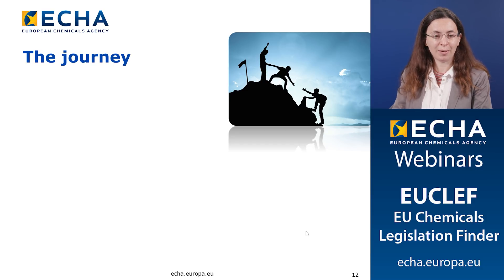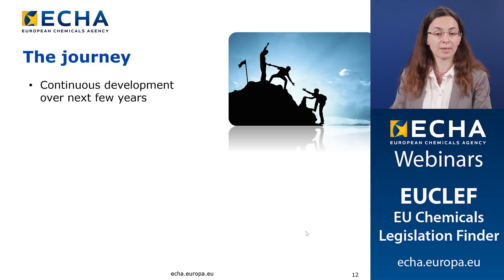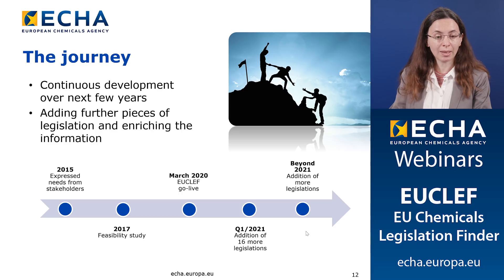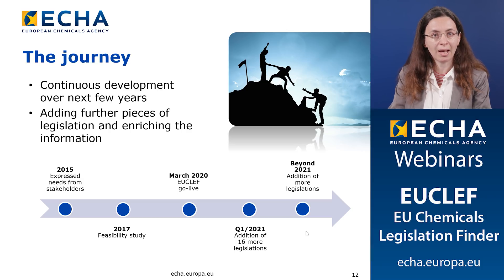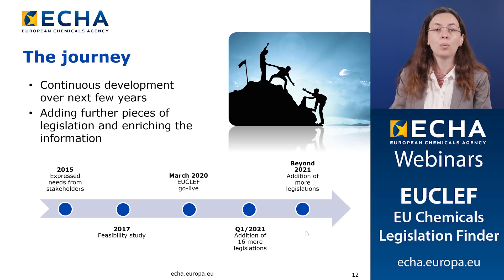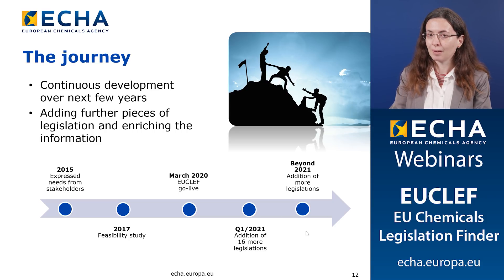How did EUCLIF come about? The journey was a continuous development of several years, and we hope to be continuously adding legislation in the years to come. We started back in 2015 when stakeholders expressed interest. In 2017, ECHA was identified as the home of EUCLIF. March 2020 is a critical moment — we go live and make the tool available to you. Q1 2021 will see the enrichment of the service with more pieces of EU legislation. Please use the tool, give us feedback, and promote it so that we can enrich it even further.